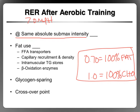Think about what RER represents: lower after training means more fat use, higher means greater carbohydrate use. After training, RER is going to be lower — closer to 0.7 — because as we established in Chapter 2, after training you're able to use more fat. The body wants to use fat as its first choice. The reason it doesn't at certain intensities is because fat can't keep up, but with training, fat becomes faster. We get more FFA transporters as one example of adaptations that occur.